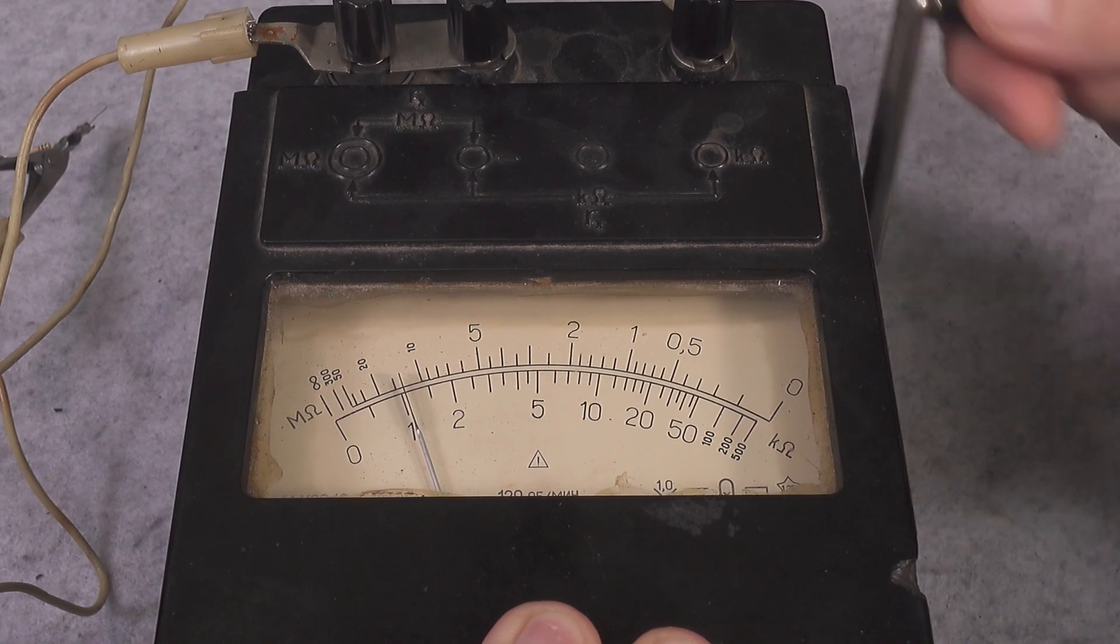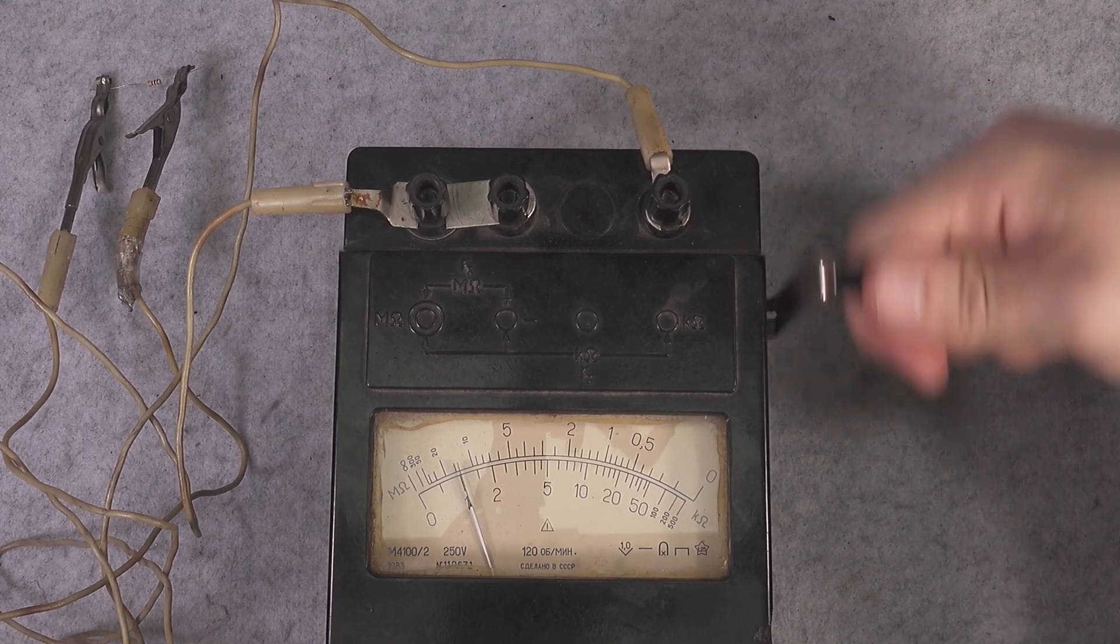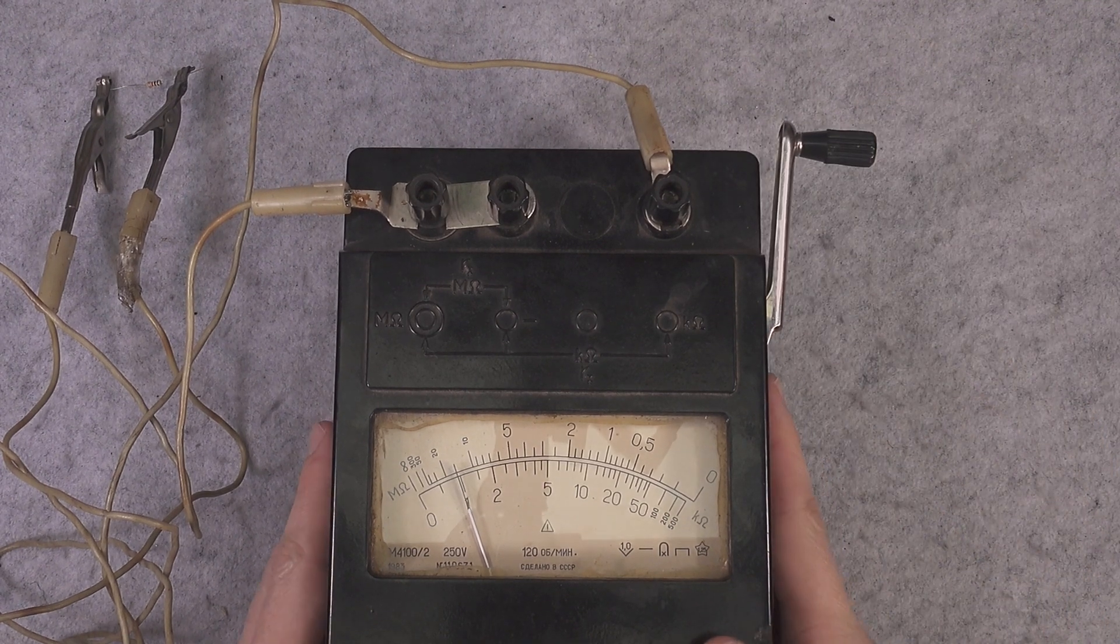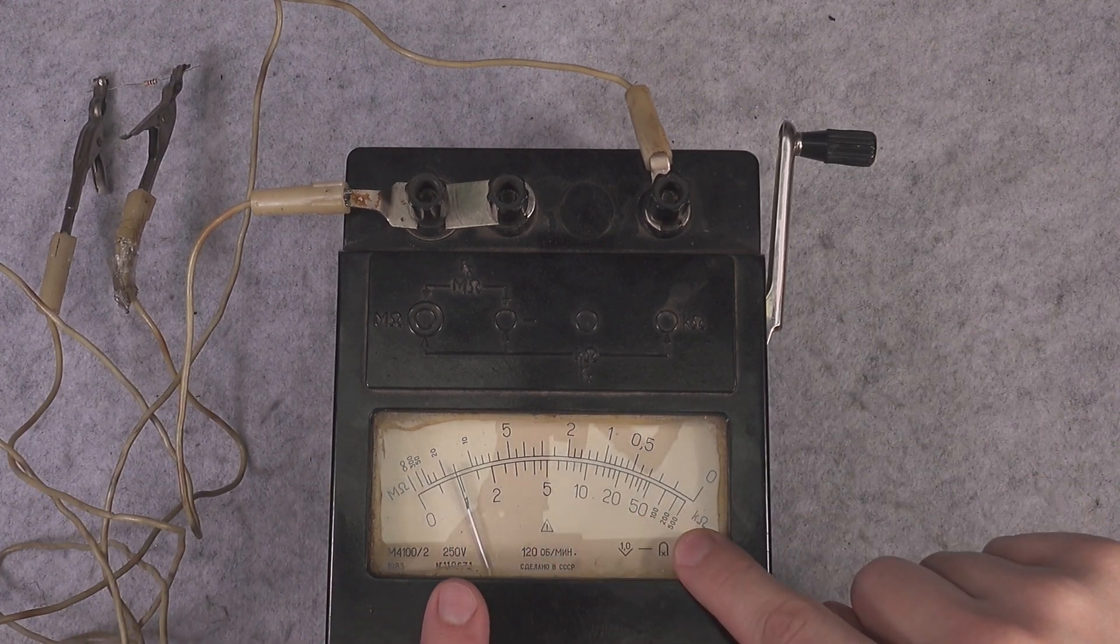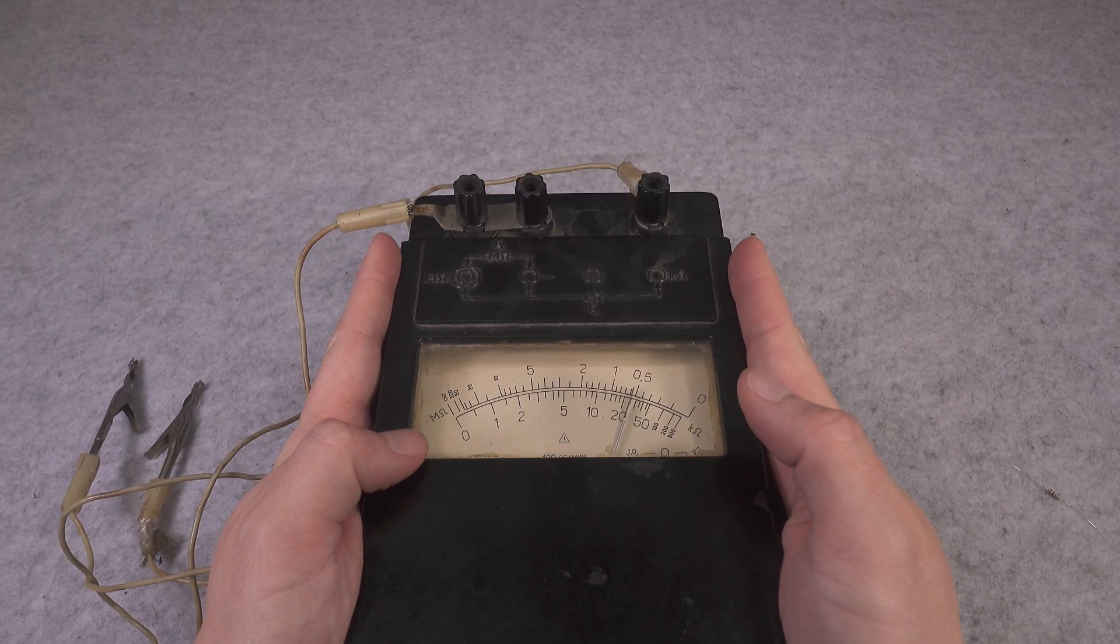Now we are going to nice and steady crank, and as you can see we've got a perfect measurement of one kilo ohm because we are going to be using the bottom scale. Here you've got the kilo ohm.